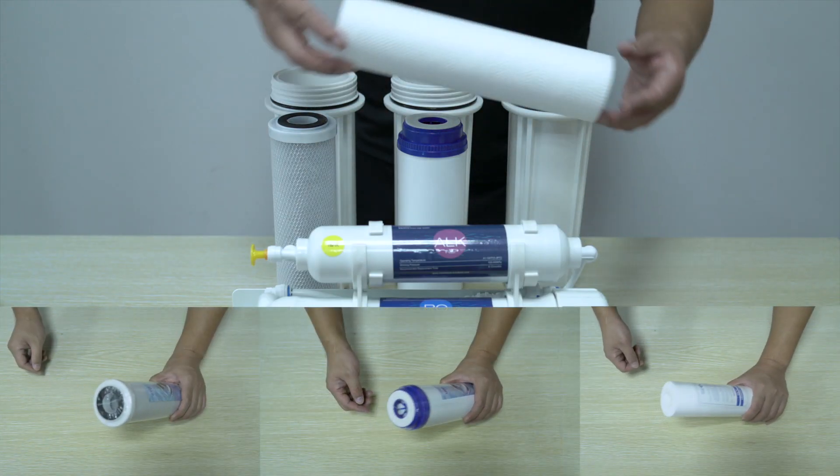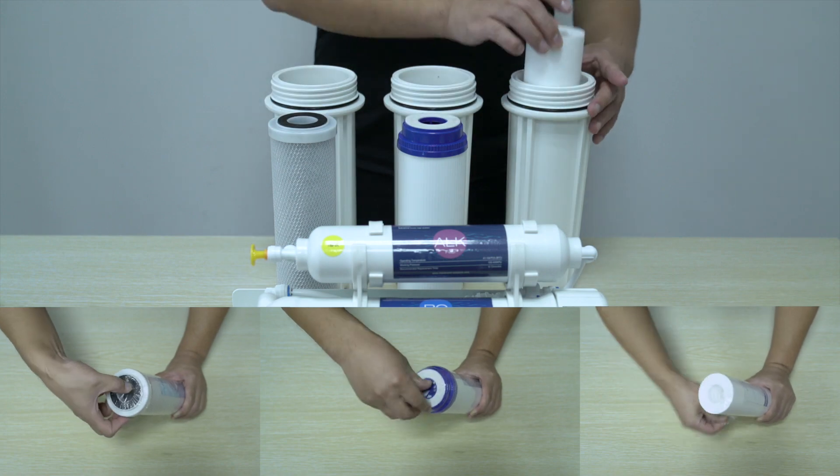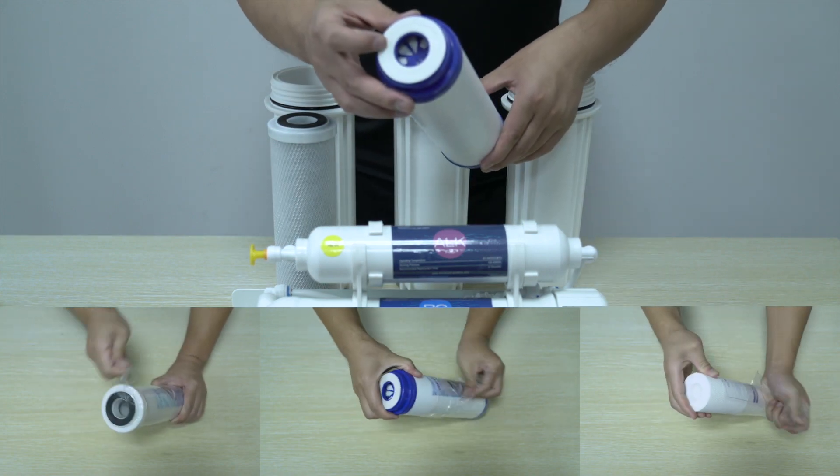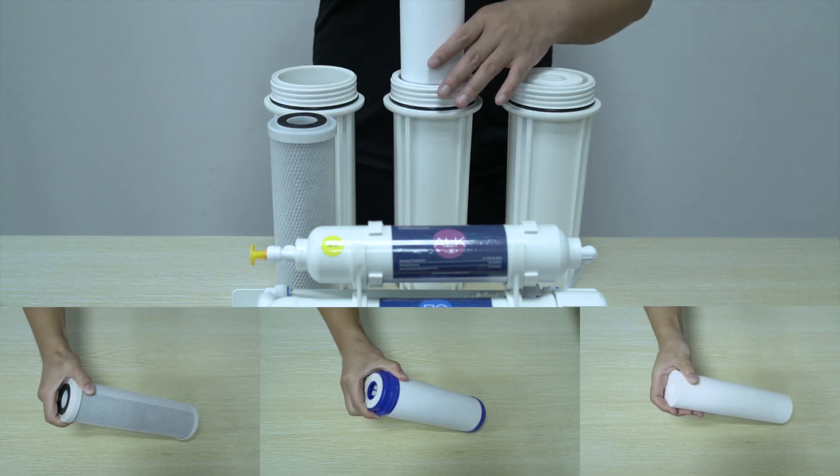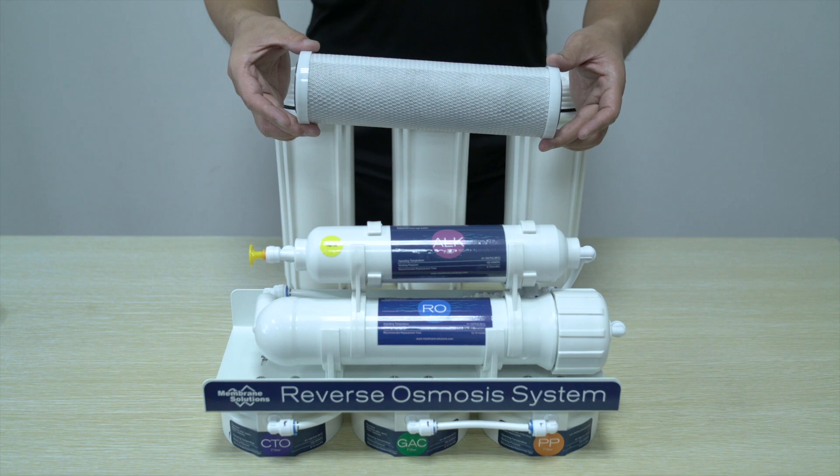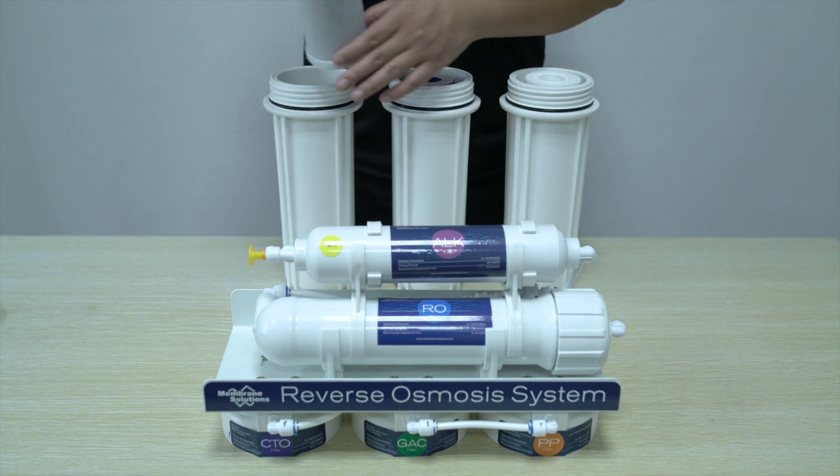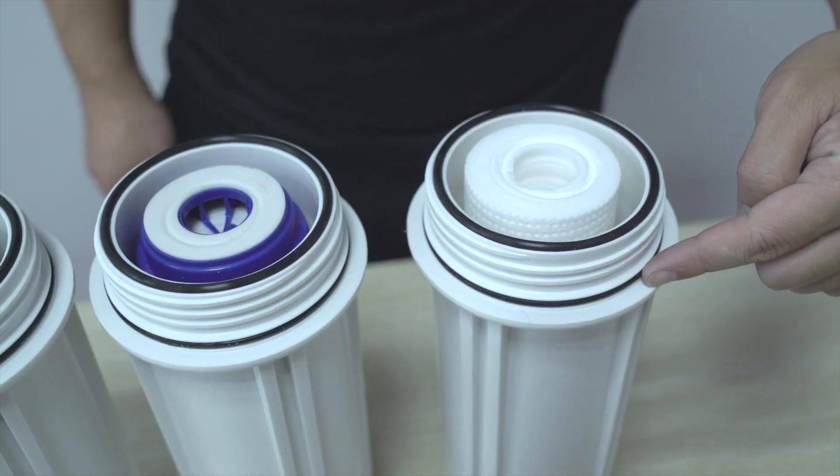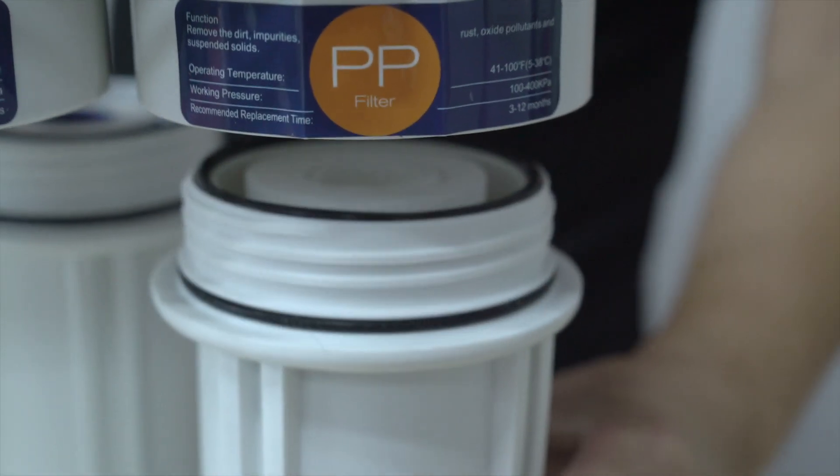Install the PP filter in the right-hand filter bowl either way around after removing all the packaging. Next, be very careful when installing the GAC filter into the center position bowl that is the correct way around and all packaging is removed. Once all filter bowls are in place, apply the black sealing gasket upwards towards the filter bowl.